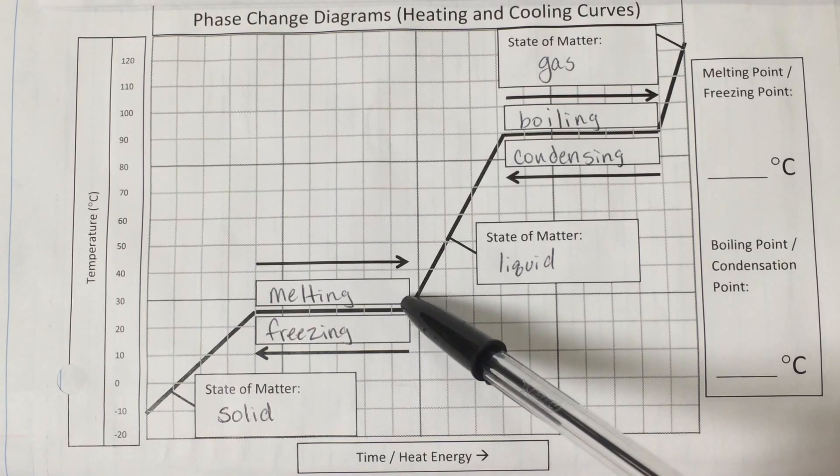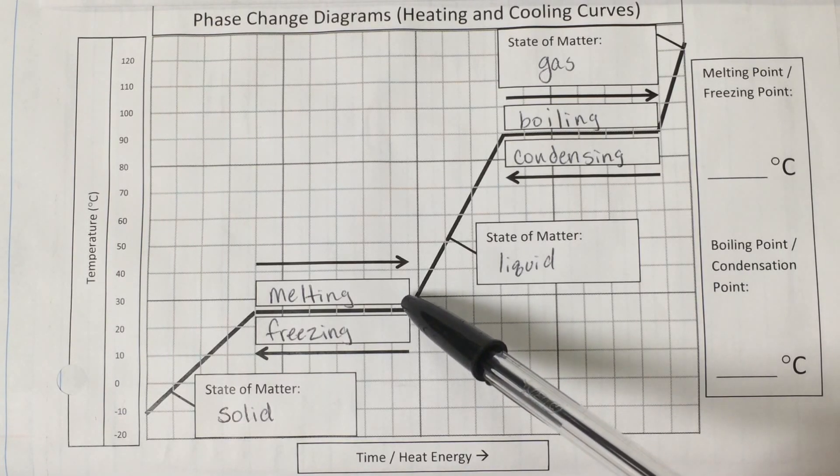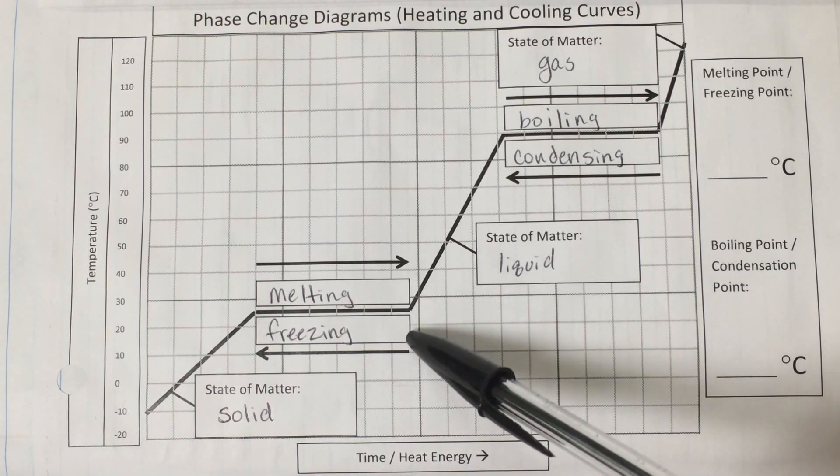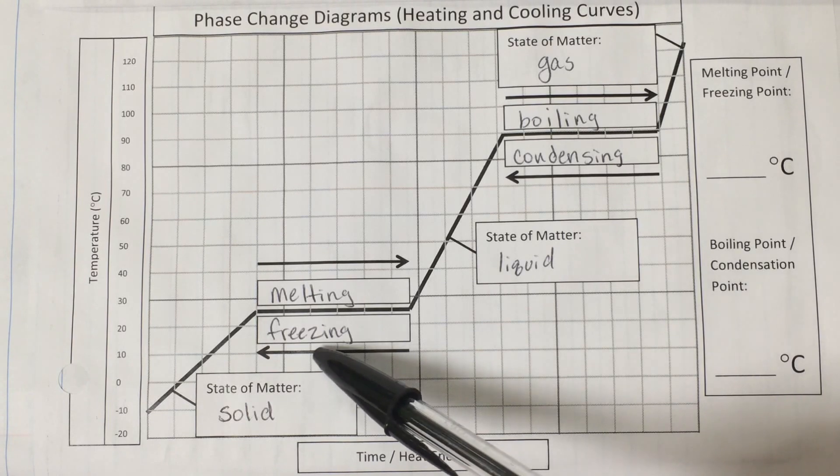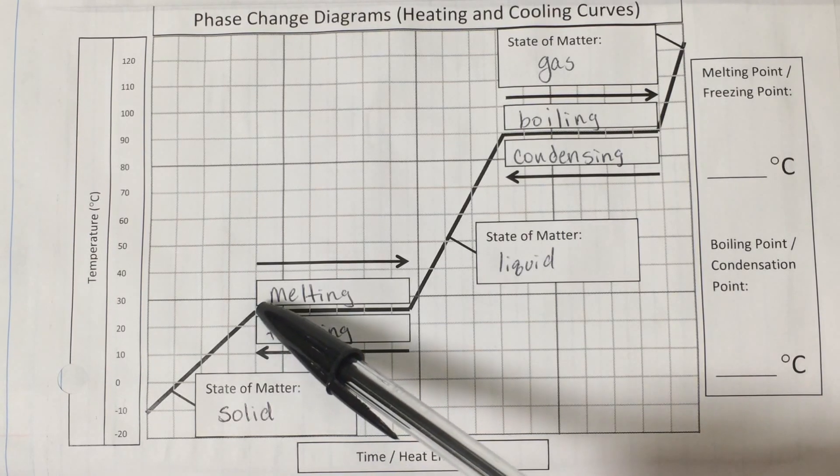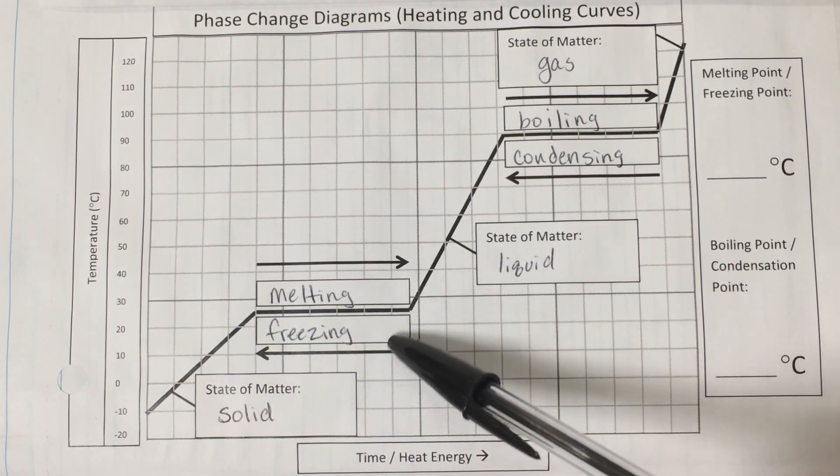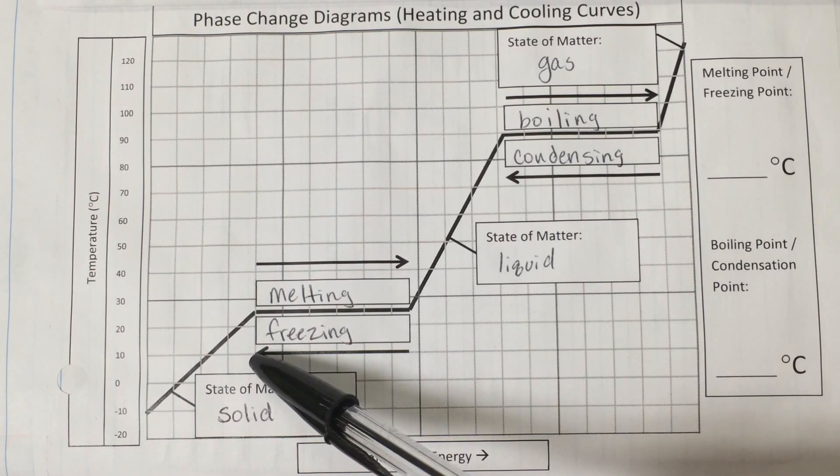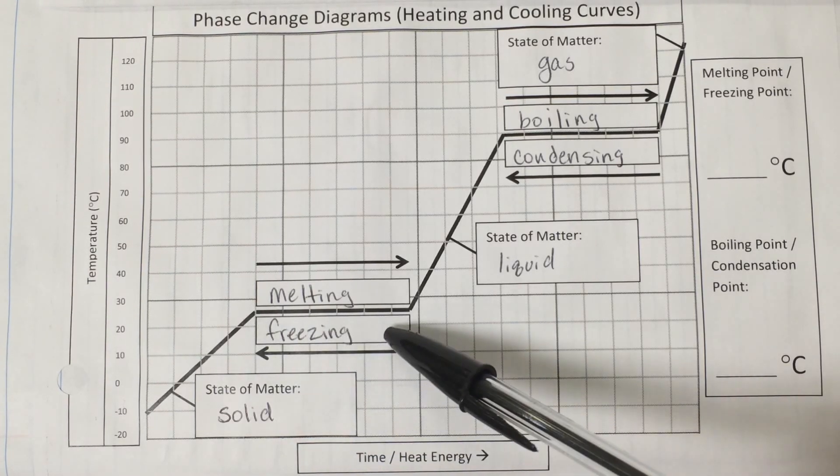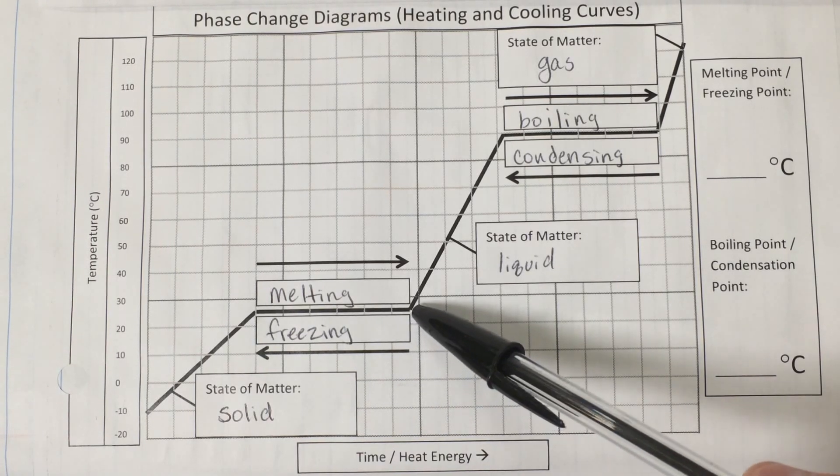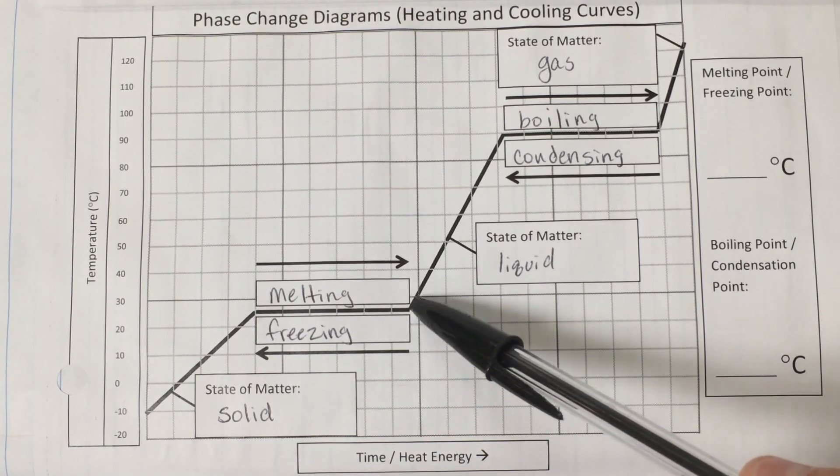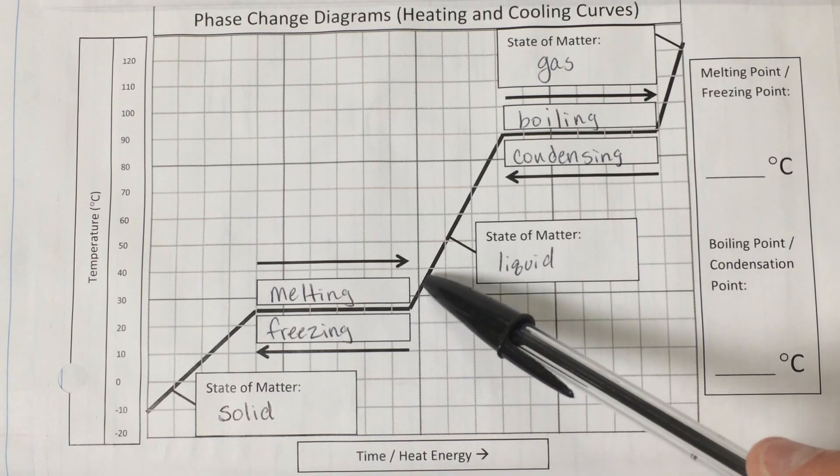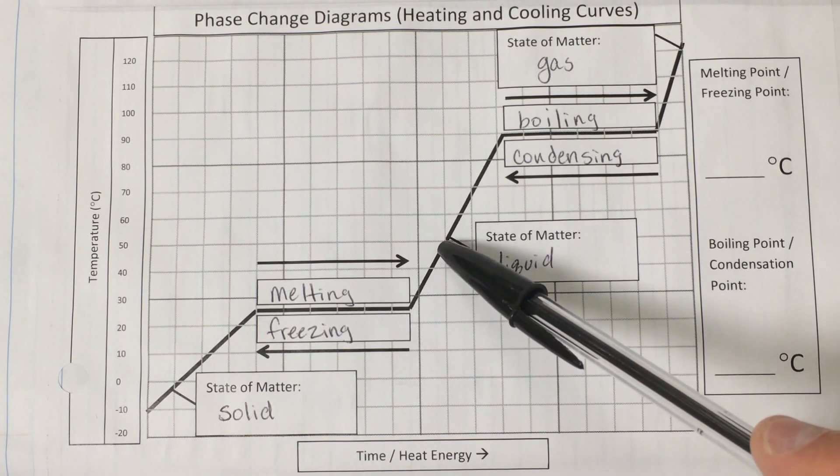So during the melting process, during that phase transition, the temperature remains constant, and simultaneously the opposite process is also occurring, so freezing is happening at the same time. Now eventually if we continue to put enough energy into the system that all of the solid melts and turns into a liquid, then we can begin heating, well we would still be heating it, but we'll see the temperature begin to increase again now that it's in the liquid phase.